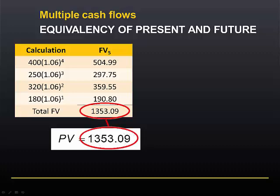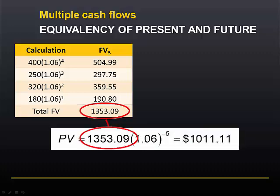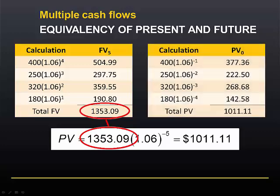So we insert that into the formula, discount it for 5 periods at 6%, and it turns out that the present value of that future value is equal to the present value of the entire series of cash flows.